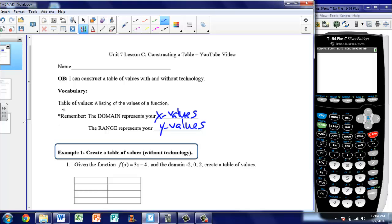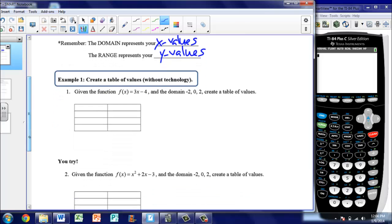So let's take a look at our first example. It says given the function f(x) = 3x - 4 and the domain -2, 0, 2, create a table of values. So here's our table. I am told that the domain is -2, 0, 2. Now we know that the domain represents our x's. So I'm going to label this my x column and then I'm going to put in those values: -2, 0, and 2.